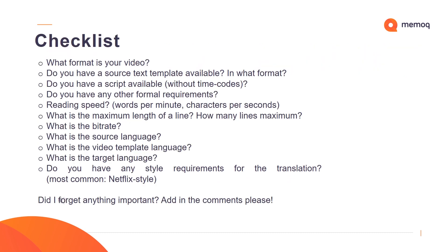You can use the following checklist when a customer sends you audiovisual material for translation. You may ask them: What format is your video? Do you have a source text template available, and in what format? Do you have a script available without the time codes? Do you have any other formal requirements? What about reading speed — would you like it in words per minute or characters per second? What is the maximum length of a line? How many lines maximum? What is the bit rate? What is the source language? What is the video template language? What is the target language? Do you have any style requirements for the translation? If I forgot anything important, please add it in the comments below.